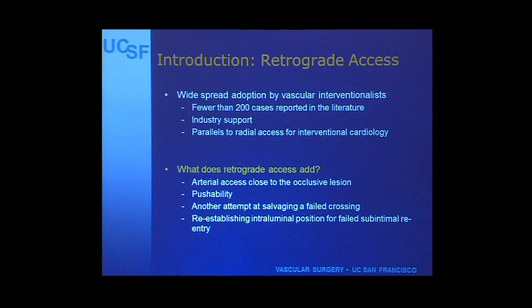What does it add? It really adds pushability. You get arterial access adjacent to a lesion - lesions in the tibio-perineal trunk and in the tibials - and it gives you another opportunity at attempting salvage after a failed crossing. A lot of times you can end up in a sub-intimal plane, and this gives you the option of re-entering or re-establishing an intraluminal position after performing a wire exchange. It seems like a very common procedure, but there's not a lot published about it.